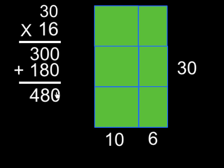Starting in the ones column, zero and zero is zero. In the tens column, zero tens and eight tens are eight tens. In the hundreds column, 300s and 100 is 400. So together, those two partial products make 480. So 30 times 16 is 480.